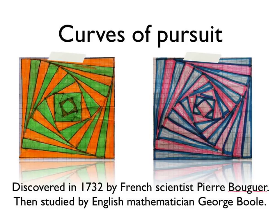Curves of Pursuit look like this. Two fantastic examples here. Can you see how there are actually curves in these diagrams that are formed by the corners of the squares, the vertices of the squares, as they rotate round — you get these curves of pursuit.